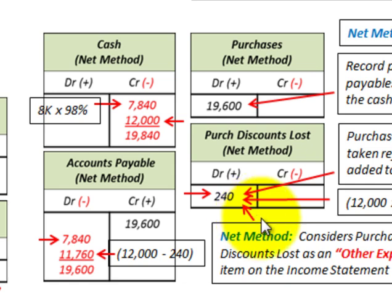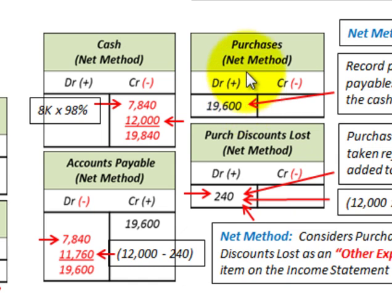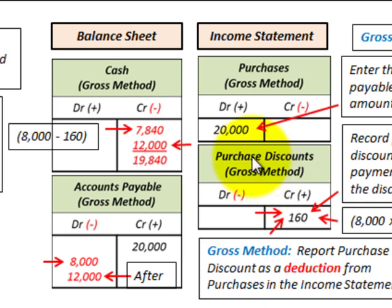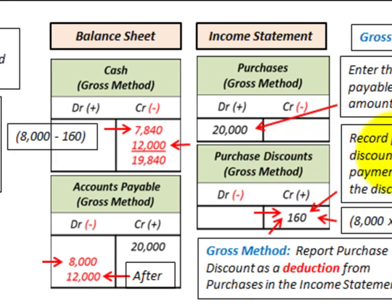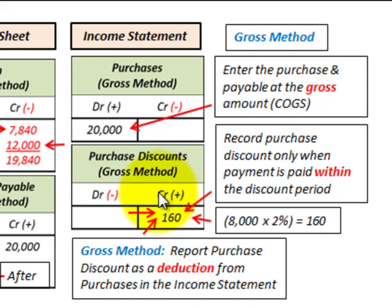In summary, with the net method you record purchases at the net amount — whatever the net of the discount is — including the expected discount in the initial purchase entry. For any discounts lost during the period, you debit the purchase discounts lost account, which represents additional expense for those lost discounts. With the gross method, you record purchases at the gross amount and only record purchase discounts when payment is made within the discount period.